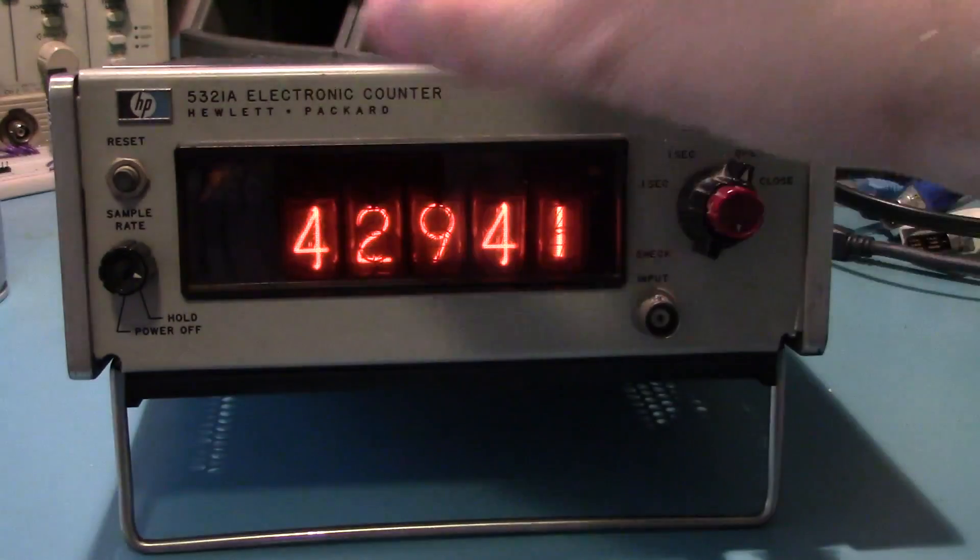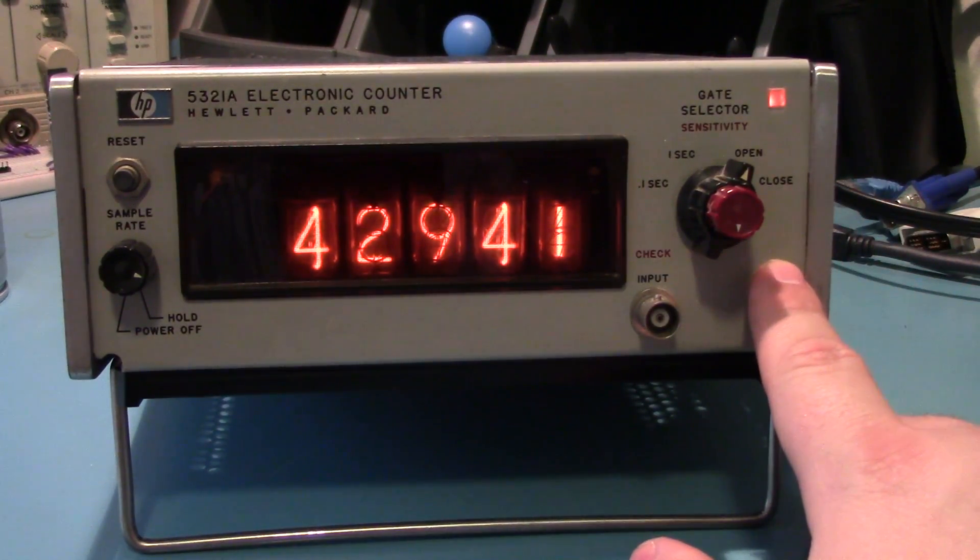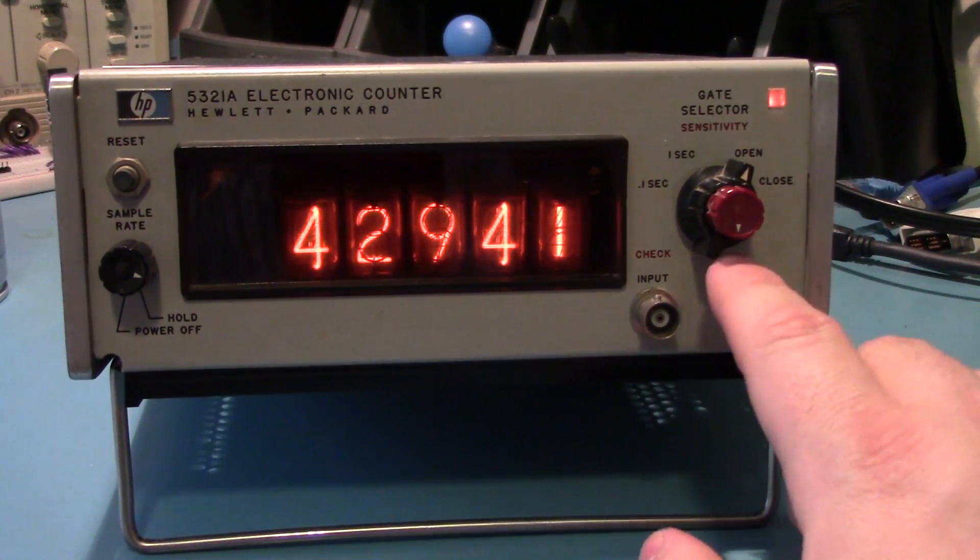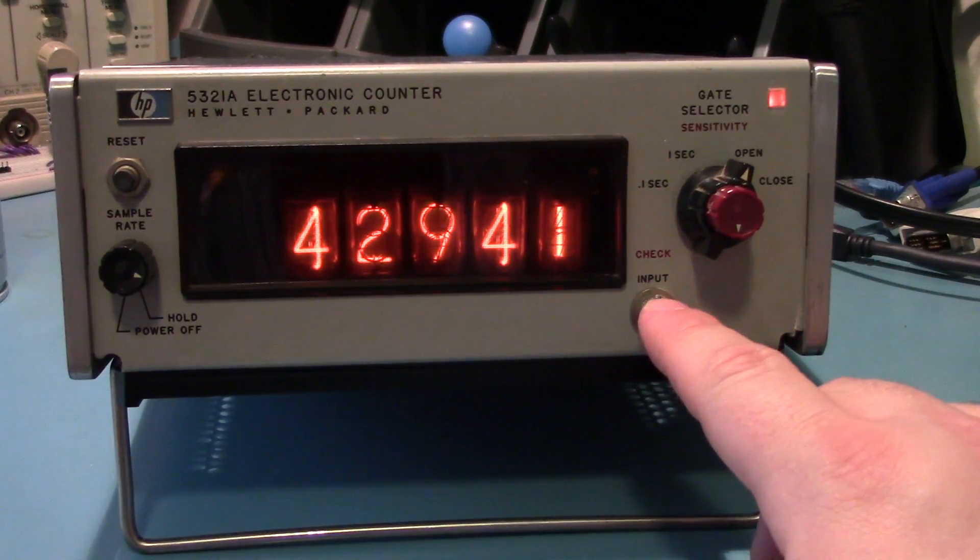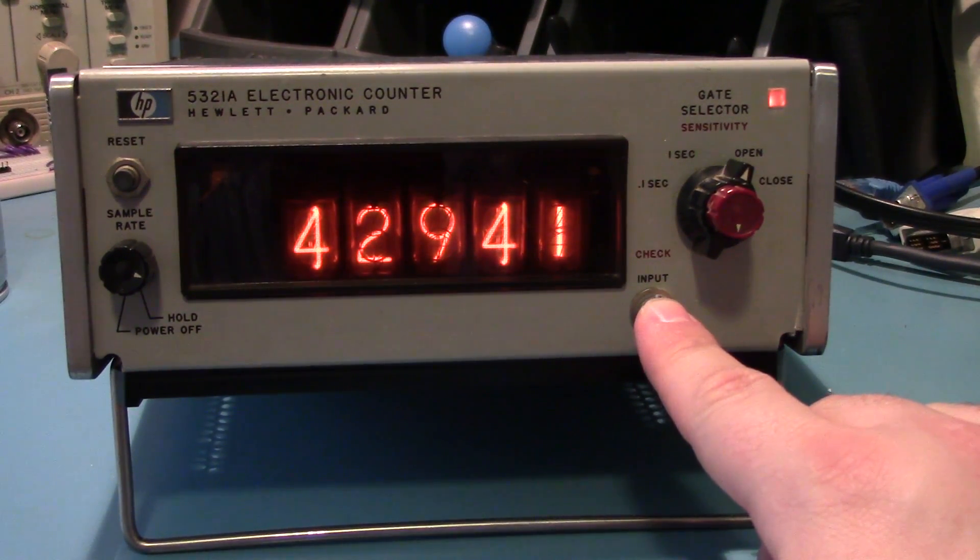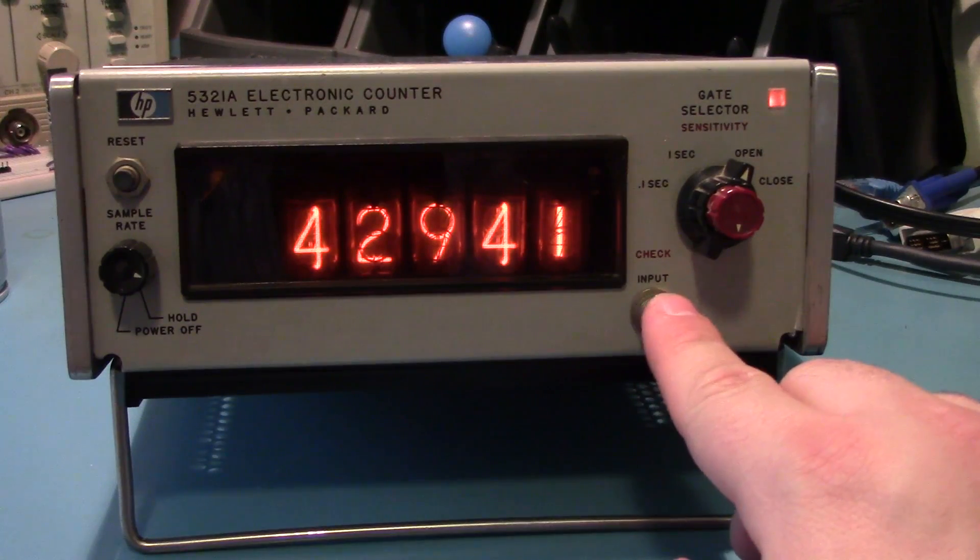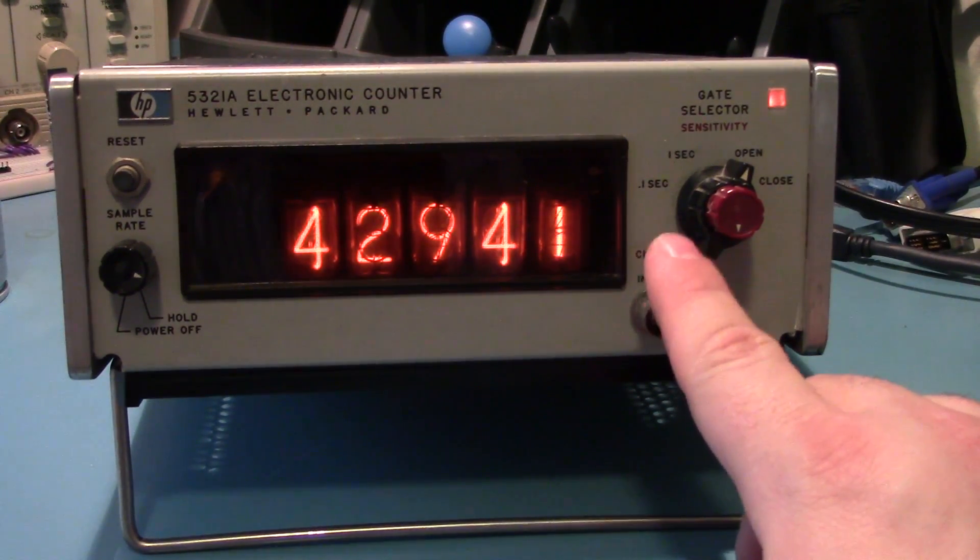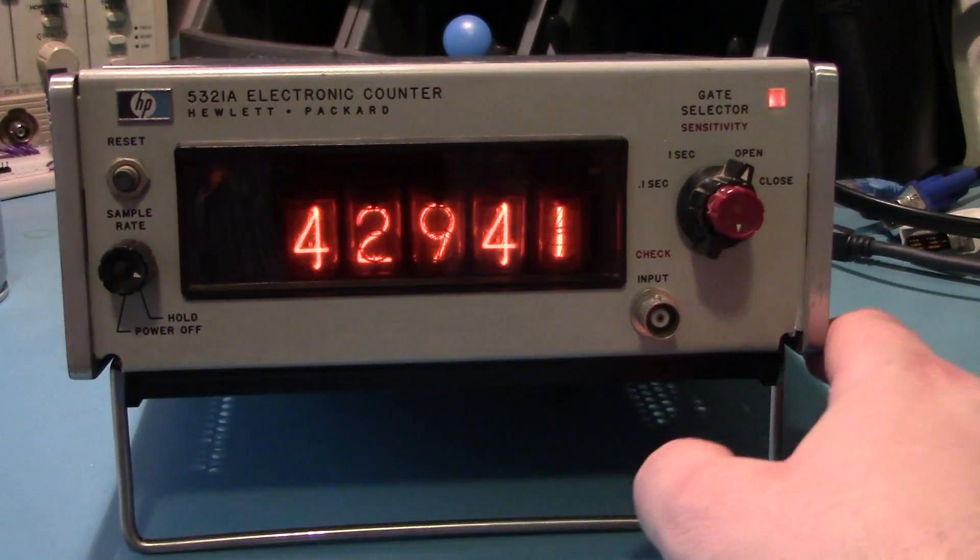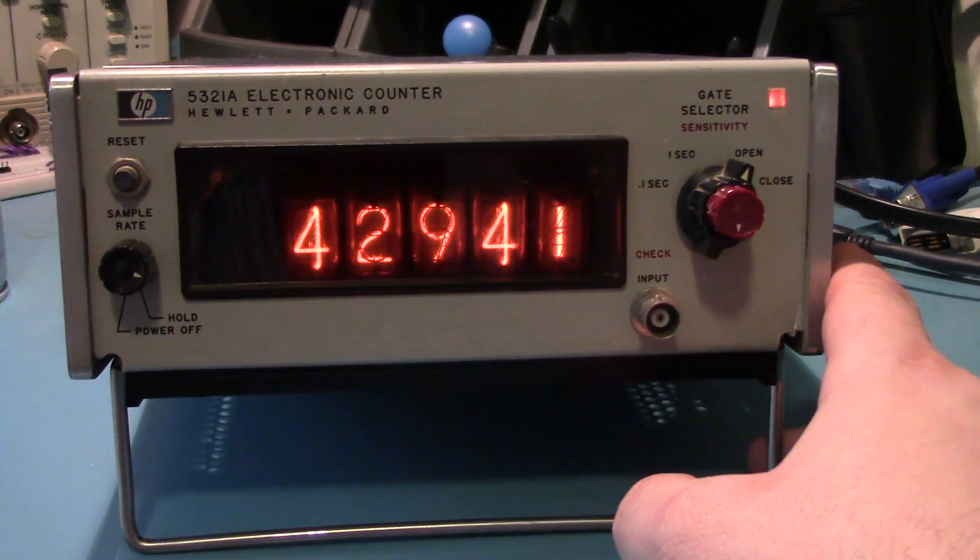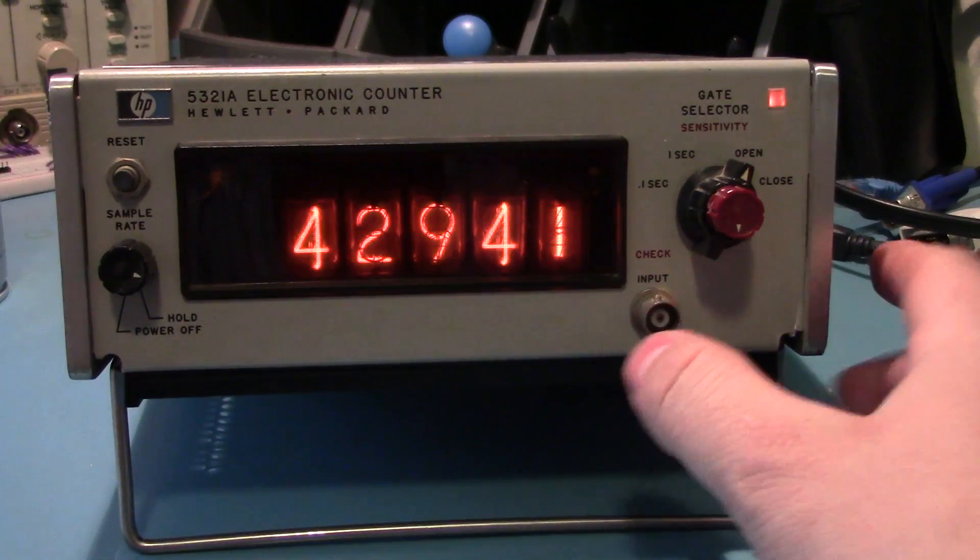I think I want to take this apart and completely restore it because it is very cool. I don't know if I'll be able to find the big axial capacitors and stuff, but I may just leave all the electronics as is. An electronic counter isn't something I need to use every day, but I just thought this was pretty cool. And I paid twenty-five dollars or twenty-six dollars including shipping for this off eBay.